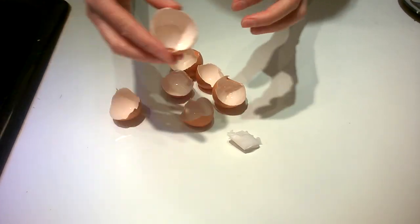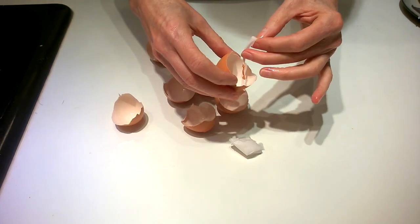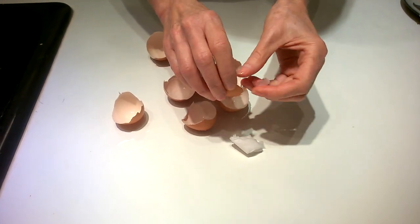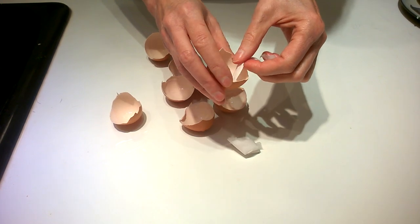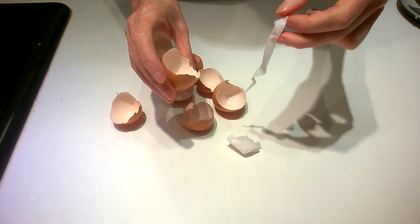So if you have breakfast, don't throw the eggshells away. Just harvest these membranes out from the inside of them and use them yourself if you need joint support, or feed them to your dogs.